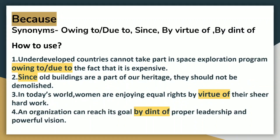The next word here is BECAUSE. This word is certainly overrated. Whenever we have to write reasons, we tend to use BECAUSE. Try using owing to, due to, since, by virtue of, or by dint of. Underdeveloped countries cannot take part in space exploration programs owing to or due to the fact that it is expensive. Since old buildings are a part of our heritage, they should not be demolished. In today's world, women are enjoying equal rights by virtue of their sheer hard work. An organization can reach its goal by dint of proper leadership and powerful vision.